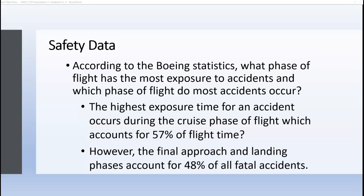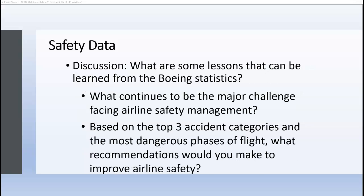The question remains: how will we reduce the rate of accidents to prevent the total number from going up? With 48% of all fatal accidents occurring during final approach and landing — even though cruise flight accounts for 57% of flight time — human factors and pilot error appear to be the major challenge for airline safety management. Based on the top accident categories and most dangerous phases of flight, what recommendations can we make to improve airline safety? We'll continue to discuss this in class.